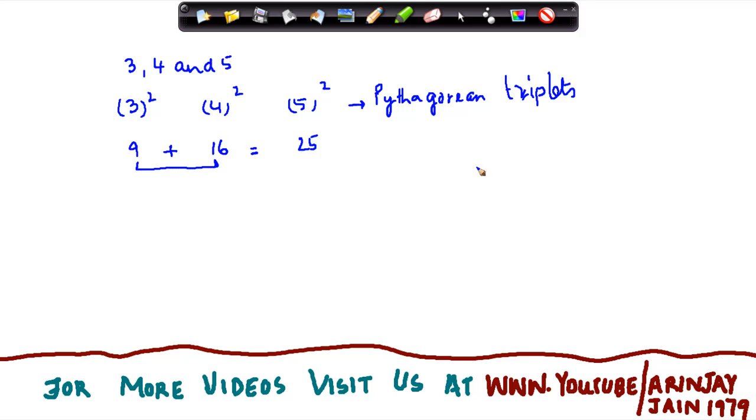Similarly, if I were to give you another example, let's say we take three numbers: 8, 15, 17. We know square of 8 is 64, square of 15 is 225, and the square of 17 is 289.